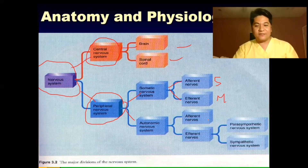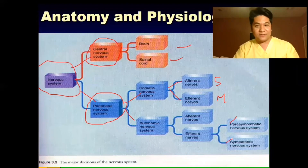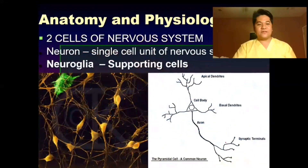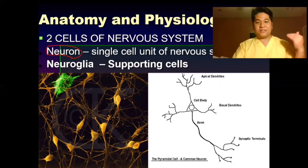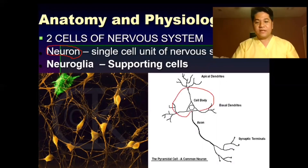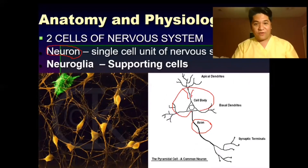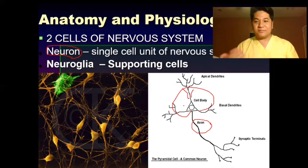Your autonomic nervous system divides into parasympathetic and sympathetic nervous systems. The basic functional unit of the nervous system is your neuron — the single cell unit responsible for transmission of all impulses. It has body parts which include your dendrites, the nucleus or cell body, and your axon. Every single unit of the nervous system is covered by myelin sheath to improve the speed of impulse transmission.